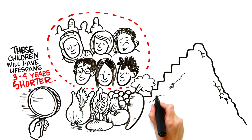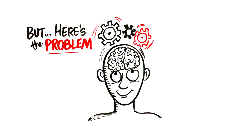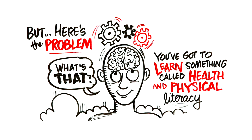So, it's clearly very important to be physically active and healthy, and to work towards getting better at it. But here's the problem. Before you can make changes and get to a position where you're physically active and making healthy decisions, you've got to learn something called health and physical literacy. What's that, you ask?